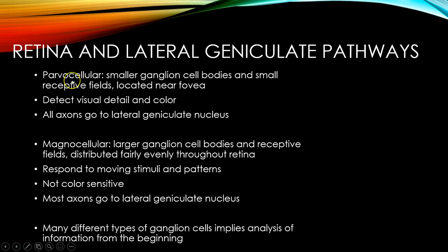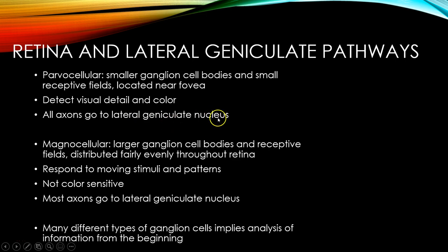We have two different pathways in the brain: a parvocellular pathway and a magnocellular pathway. The parvocellular pathway is made up of smaller ganglion cell bodies and small receptive fields located near the fovea, and this pathway seems particularly receptive to detecting visual details and color. The magnocellular pathway is made up of larger ganglion cell bodies, has larger receptive fields distributed fairly evenly throughout the retina, responds to moving stimuli and patterns, and is not color sensitive. Most of those axons go through the LGN.